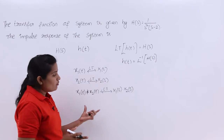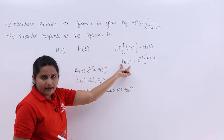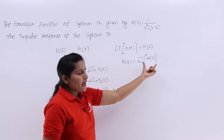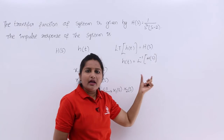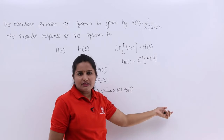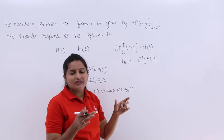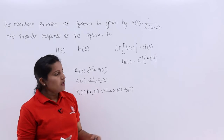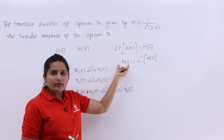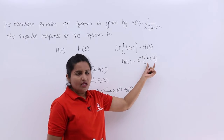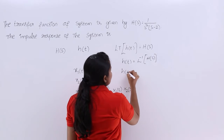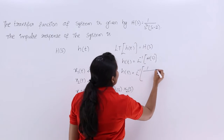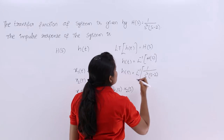Now I am going to use this property. They are asking what is the signal — the time domain representation. Impulse response is always in the time domain and transfer function is always in the frequency domain, whether in Fourier transforms or Laplace transforms. They are asking what is the time domain signal for this. So h(t) is the inverse Laplace transform of 1 / (s² · (s - 2)).